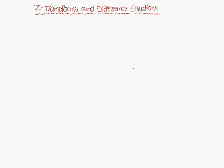Today we are going to discuss Z transforms and difference equations. First we will discuss what is meant by Z transform — the definition of the Z transform. We consider a function f of n, defined for n equal to 0, 1, 2, 3, and so on. Then Z of f of n is equal to sigma n equal to 0 to infinity of f of n into z power minus n. This is the Z transform definition.